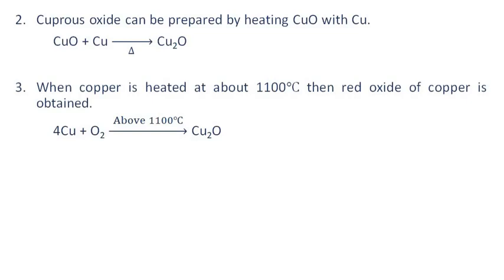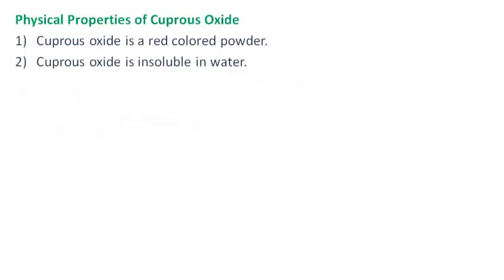When copper is heated at about 1100 degrees Celsius, then red oxide of copper is obtained. Cuprous oxide is a red colored powder and is insoluble in water.